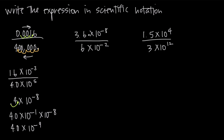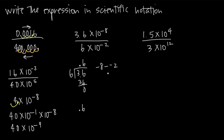Now the second example: 3.6 times 10 to the negative 8 divided by 6 times 10 to the negative 2. We handle the decimal numbers separately: 3.6 divided by 6. 6 can't go into 3 but it goes into 36 six times, giving us 0.6. For the powers of 10: 10 to the negative 8 divided by 10 to the negative 2 — we take the numerator exponent negative 8 and subtract the denominator exponent negative 2, which becomes negative 8 plus positive 2.